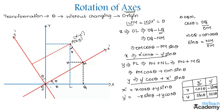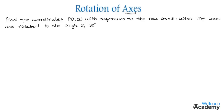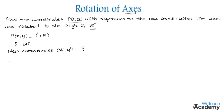Now let us discuss one example. We need to find the coordinates of point P(1, 2) with reference to the new axis when the axes are rotated by 30 degrees. So x = 1, y = 2, and theta = 30 degrees. We need to find new coordinates x-dash and y-dash, using x-dash equals x cos theta plus y sin theta.